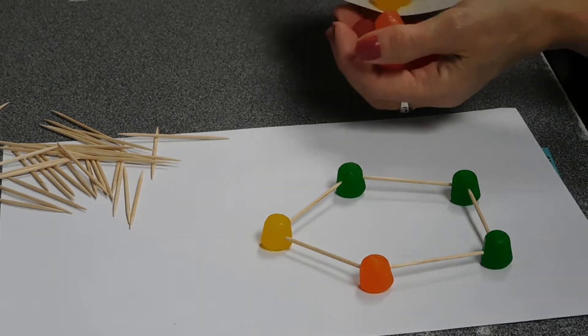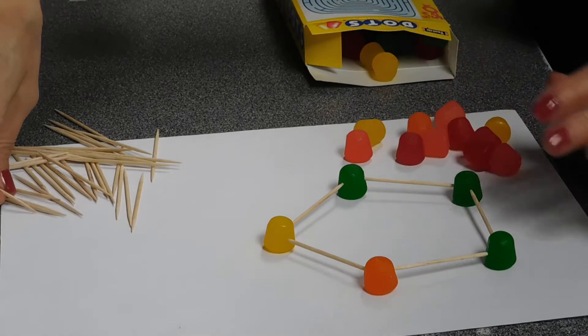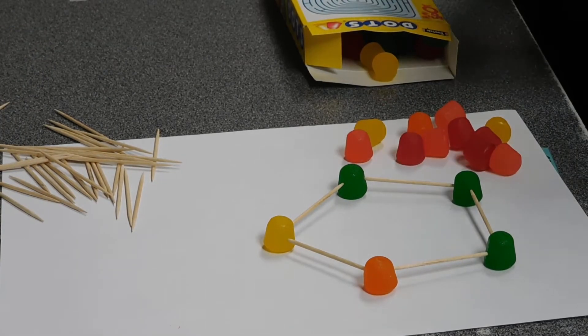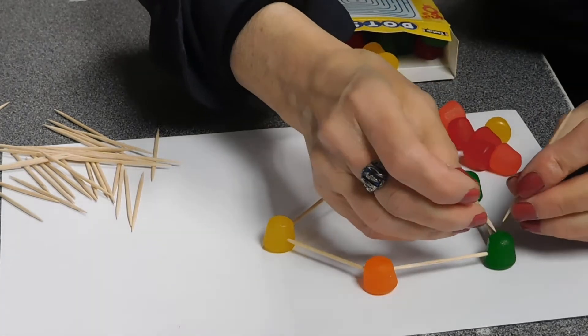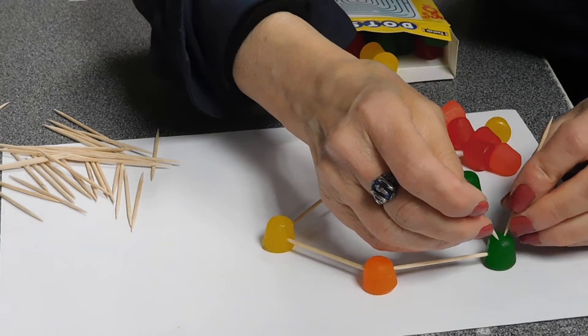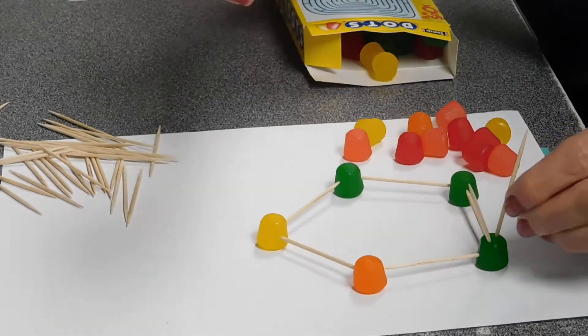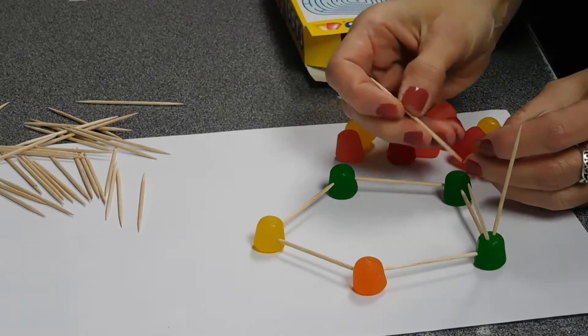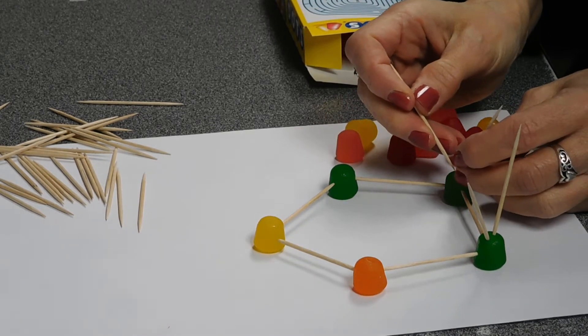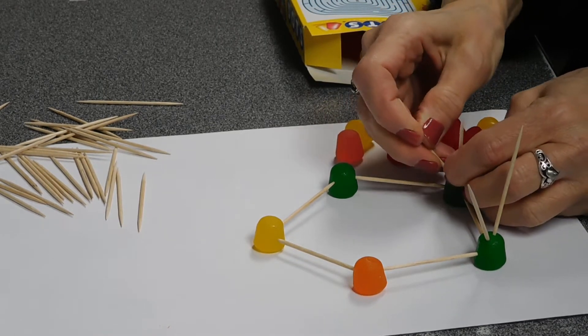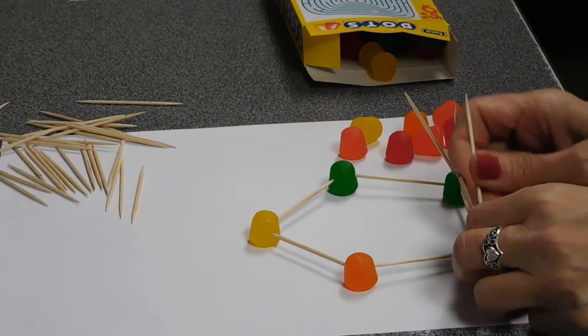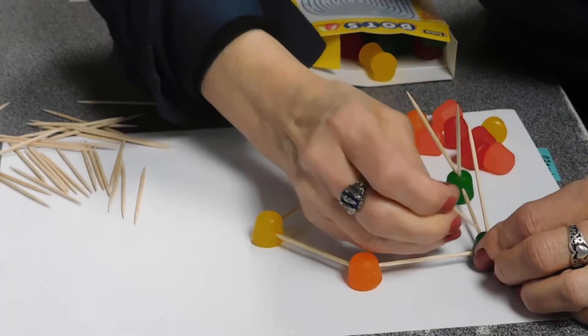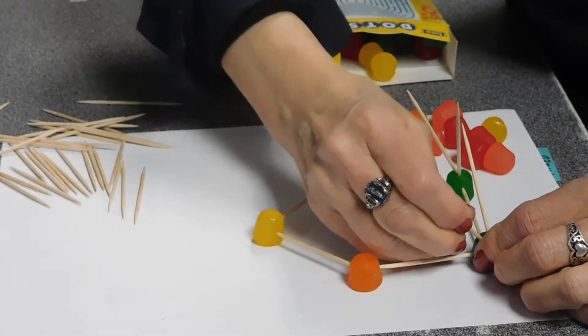So the next thing we're going to do is put two toothpicks into each gumdrop that we have there. And we just want them sticking up. That one, I don't like the way it's looking, so I'm going to change it some. There we go.